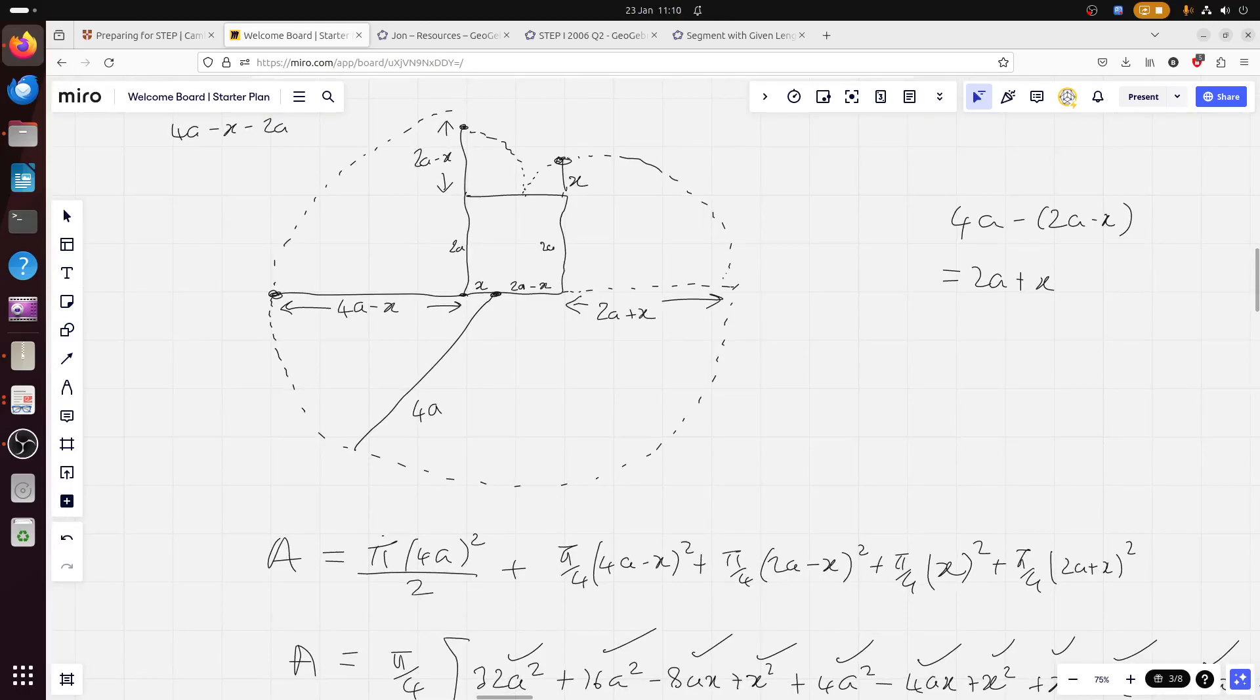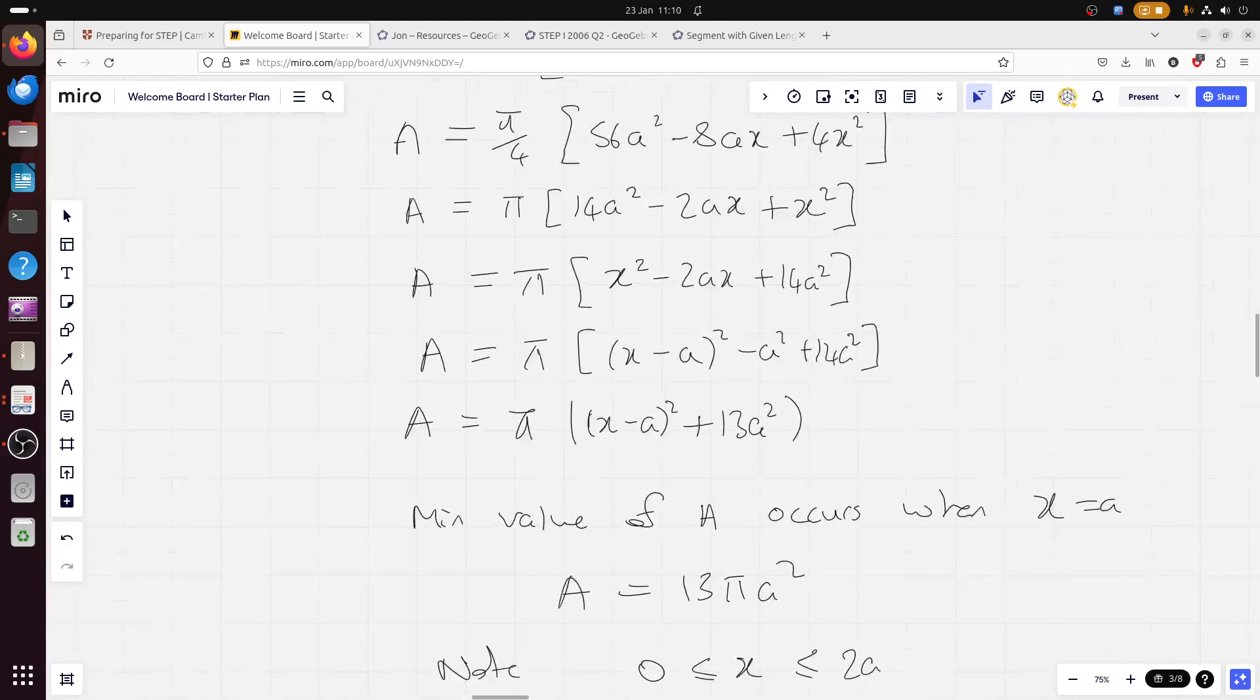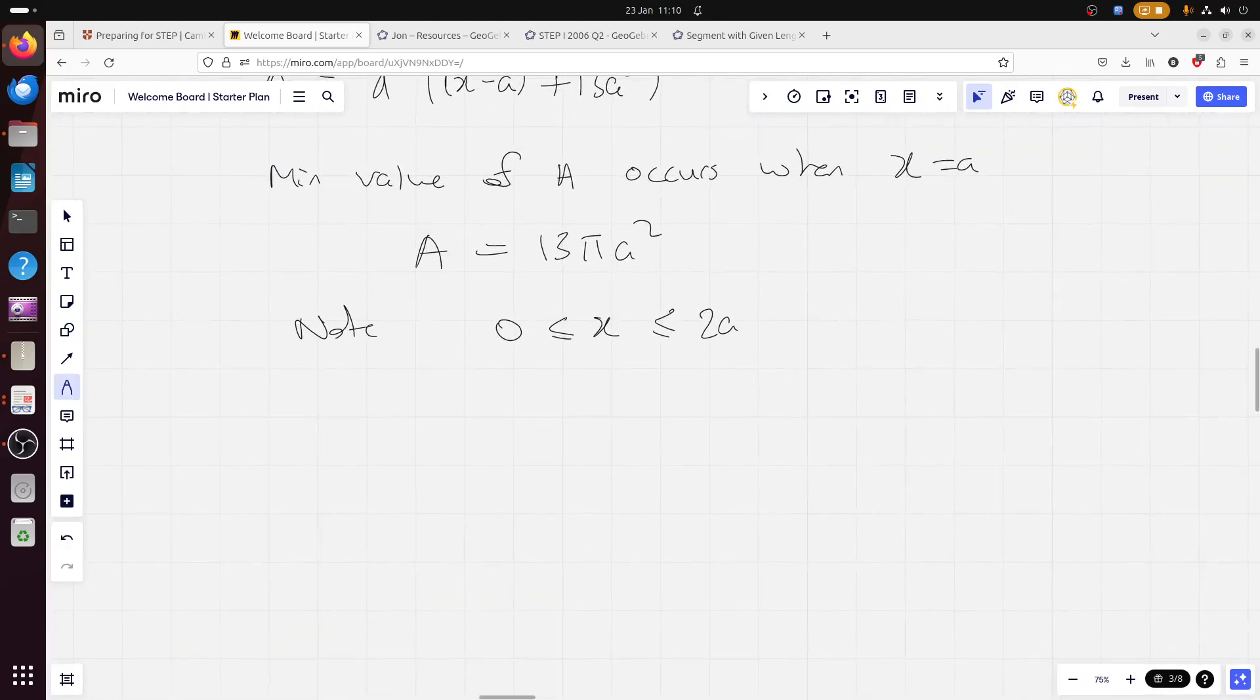And, of course, it makes sense as well in a kind of loose sense. Like, of course, you want to be tied to a corner, because then you get a big quarter circle of, you know, three quarters, sorry. You get a big three-quarter circle with the radius as 4a. And so, yeah, that makes sense. It kind of makes intuitive sense.